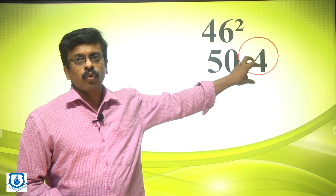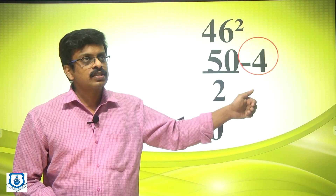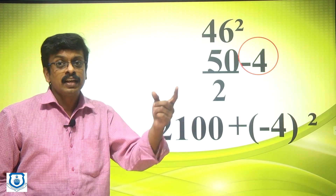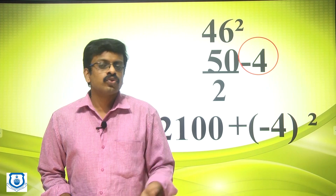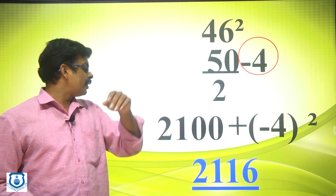One more example: 46 squared. Here, 46 is a shortage of 4 from 50, so it is 50 minus 4. You need to take special focus on that minus 4. Using the Half 50 Method, take 50 divided by 2, which is 25. Then 25 minus 4 equals 21, giving us 2100. Now add minus 4 squared, which is 16, to get the final answer: 2116.